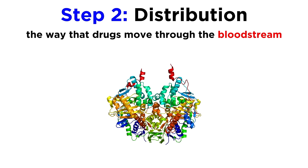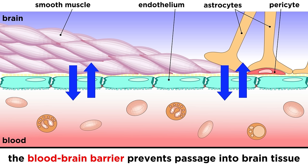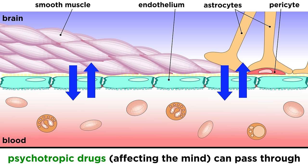Beyond these blood elements, there are other factors that may hinder the movement of a drug. There are anatomical barriers found in certain organs. We have already discussed the blood-brain barrier in the biopsychology series. This prevents certain substances from passing out of the bloodstream into brain tissue. Some drugs will not be able to surpass this barrier, while others will, such as psychotropic drugs, or those affecting the mind.